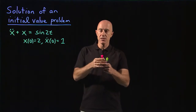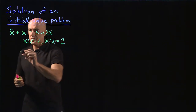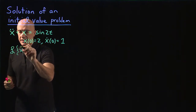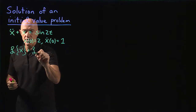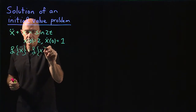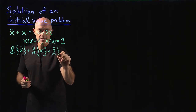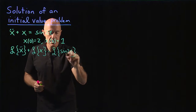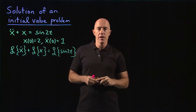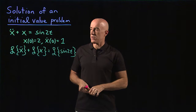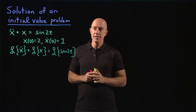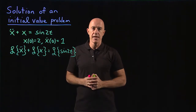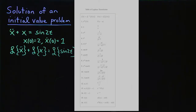So we take the Laplace transform of this differential equation. We get the Laplace transform of x double dot plus the Laplace transform of x equals the Laplace transform of sine 2t. We don't have to do any integrals — what we need to do is look at the table and read these Laplace transforms off of the table.